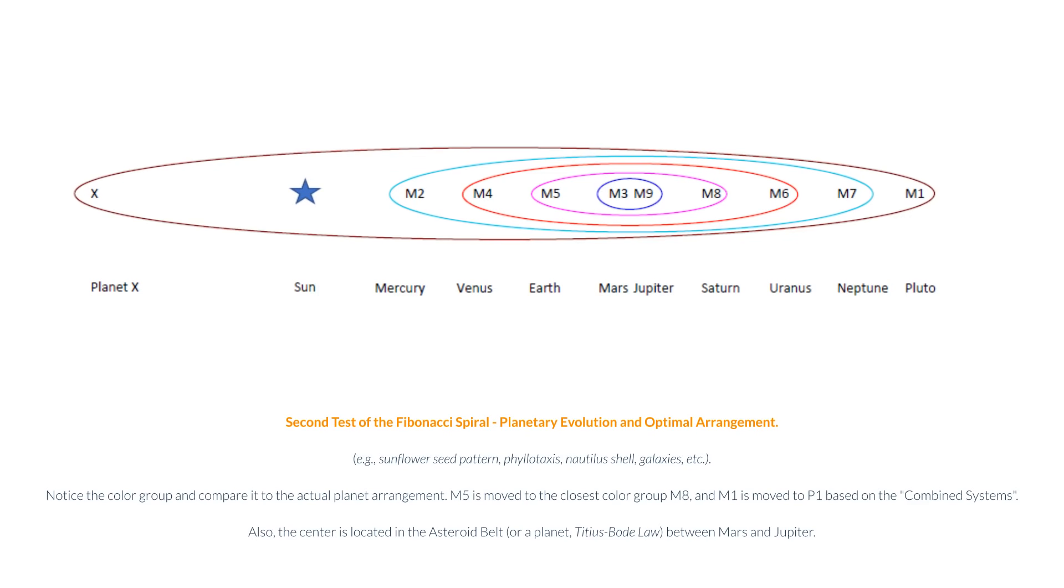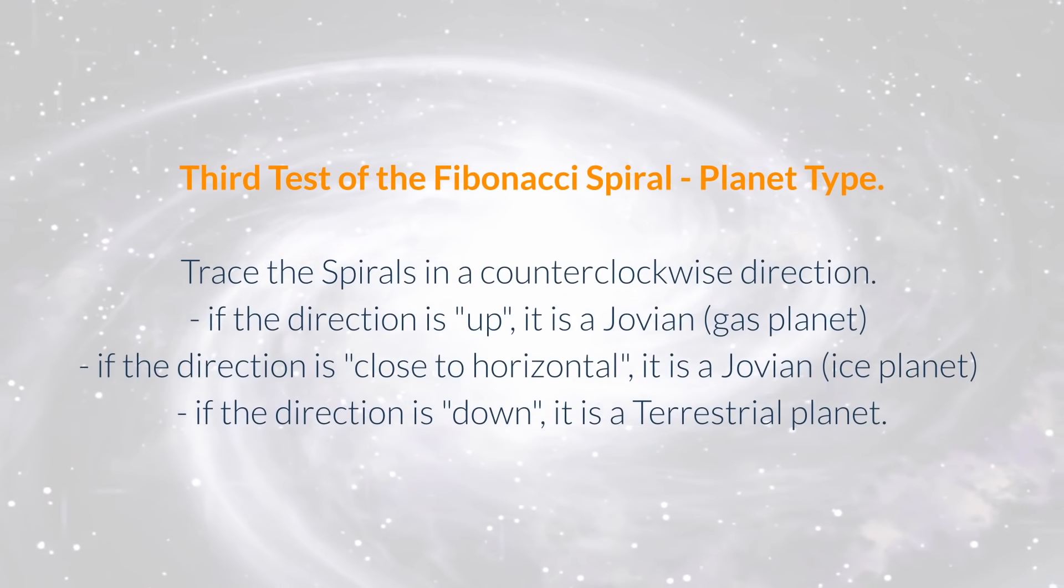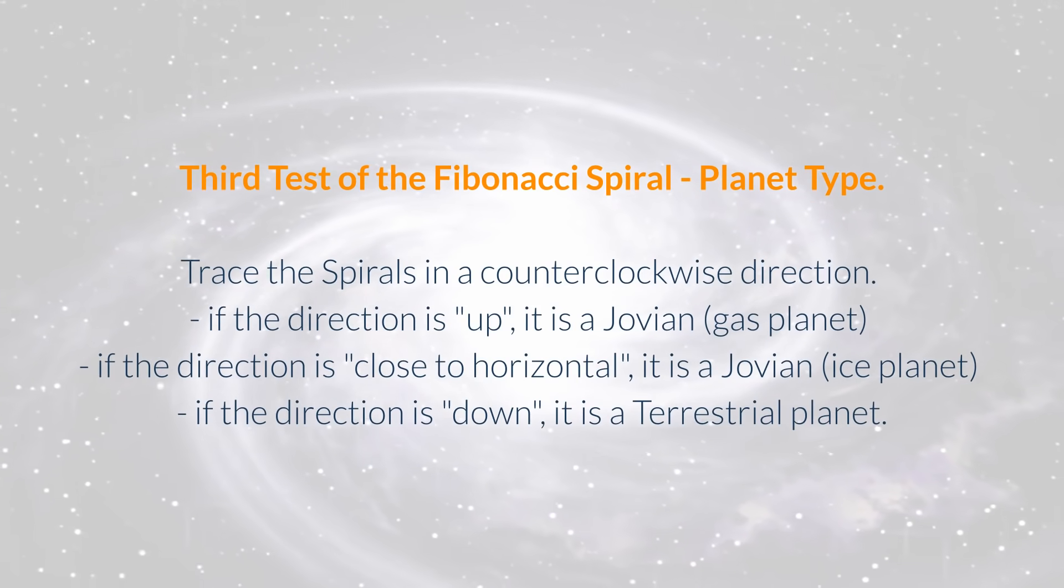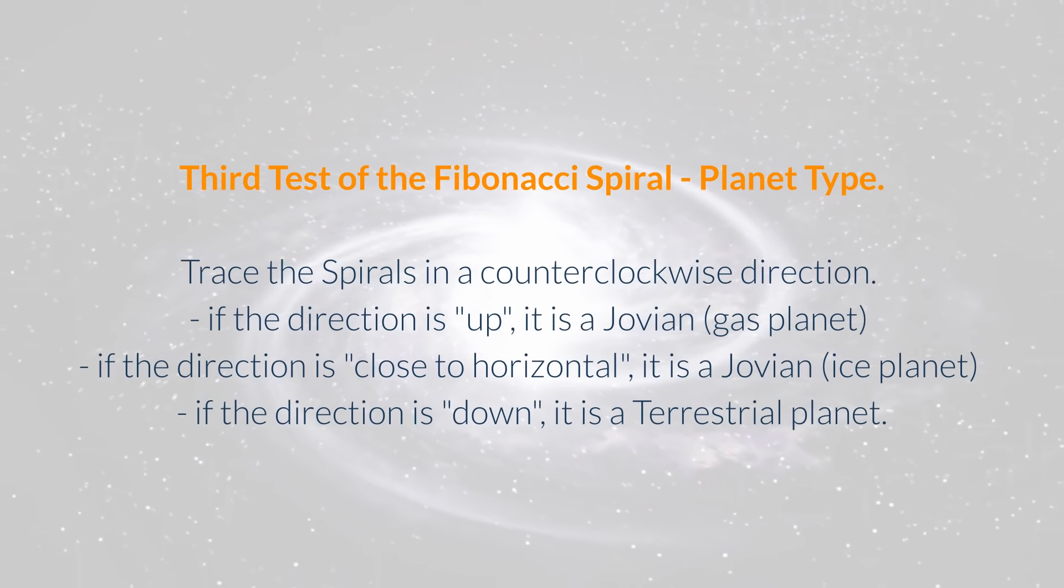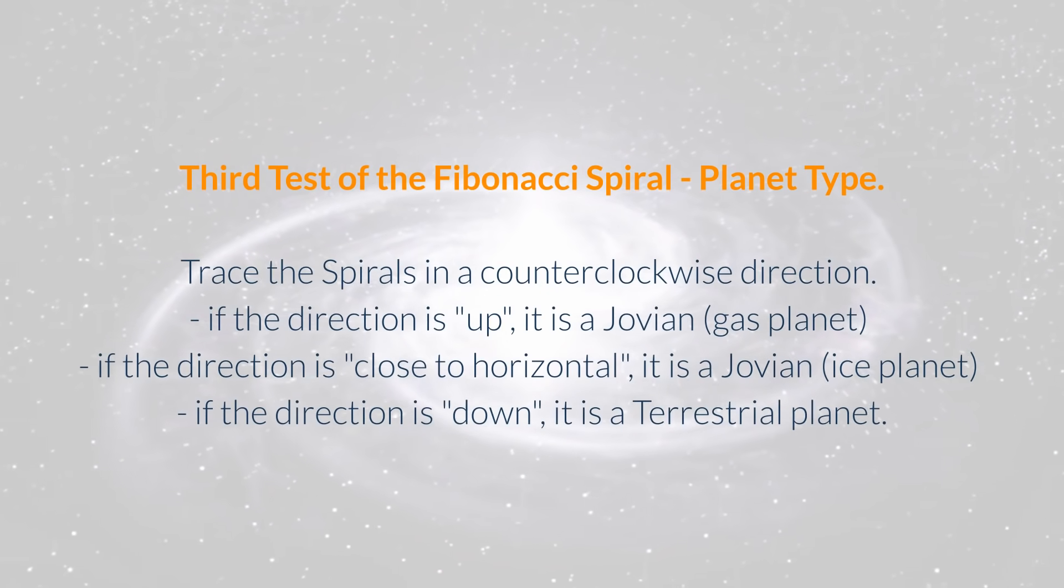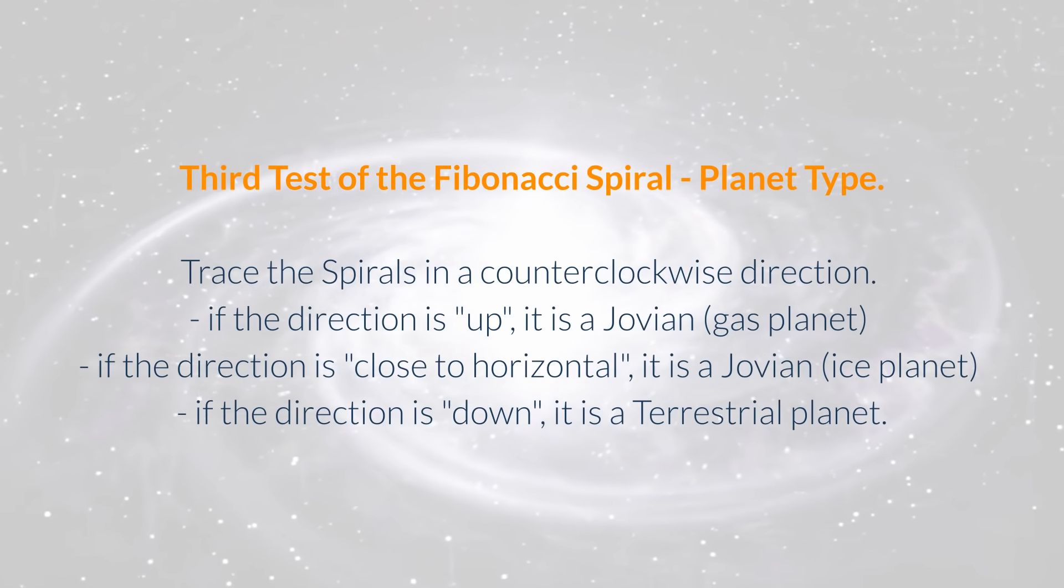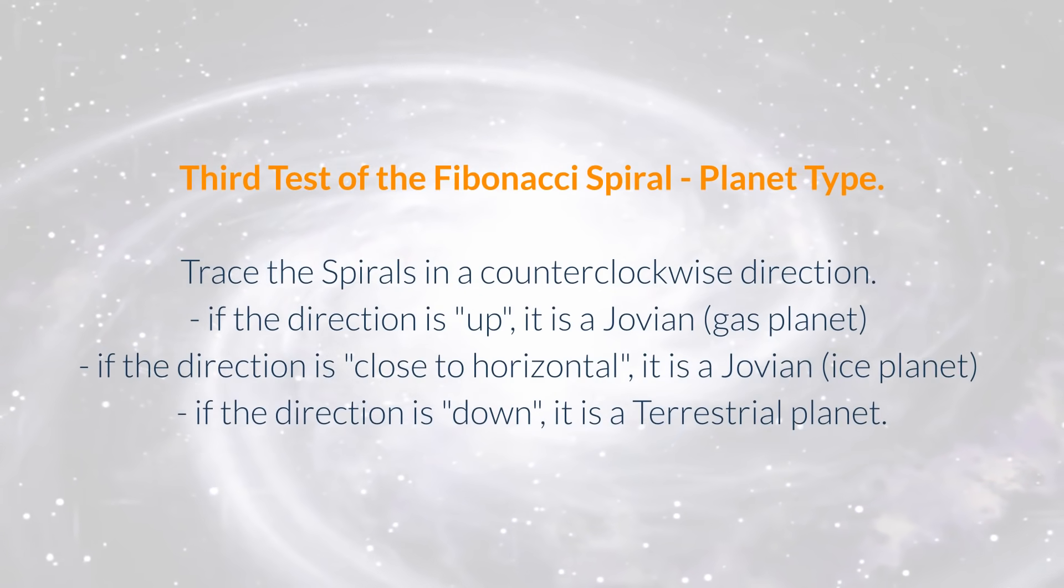Third test of the Fibonacci spiral: planet type. Trace the spirals in a counterclockwise direction. If the direction is up, it is a Jovian gas planet. If the direction is close to horizontal, it is a Jovian ice planet. If the direction is down, it is a terrestrial planet.